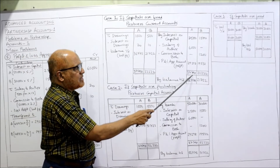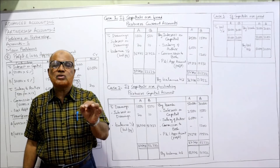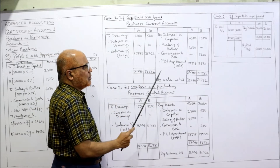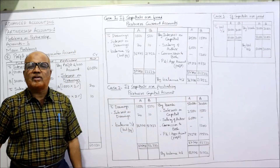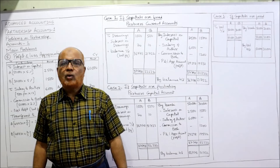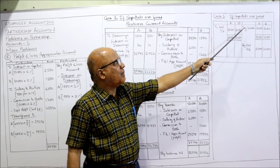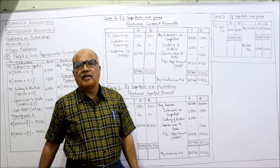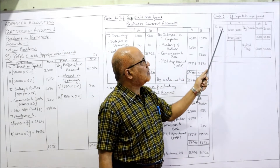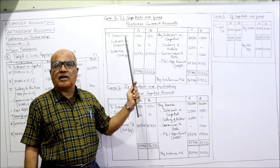The credit side total for Author's current account is 37,798. Minus drawings 1,000 minus interest on drawings 20, giving a closing balance of 36,778 for Author's current account. Similarly for Book, credit side total is 22,232. Minus drawings 500 minus interest on drawings 10, giving closing balance of 21,722 for Book's current account. The capital accounts show the opening capital contributed by bank: 50,000 for Author and 30,000 for Book, carried down unchanged.